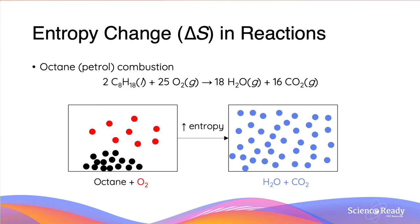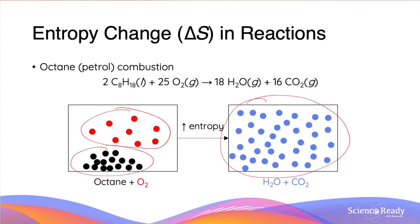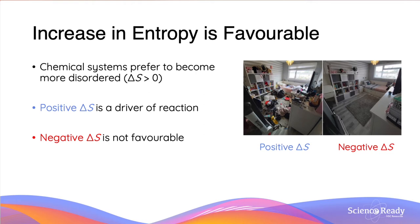Now let us look at the combustion of octane. The reactants, which were originally a combination of liquid and gas, turned entirely into a mixture of two gases. Thus, by looking at the phase changes of the reactants to products, we are able to predict whether the entropy will increase or decrease, and in this case it is going to be increasing.